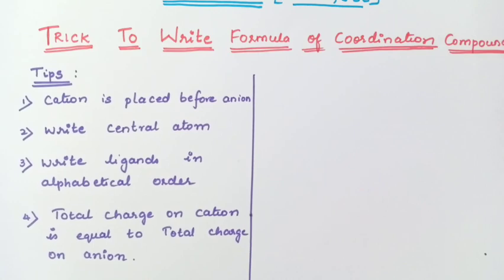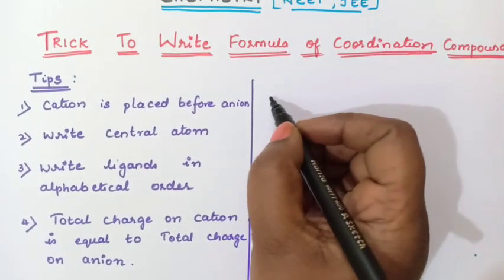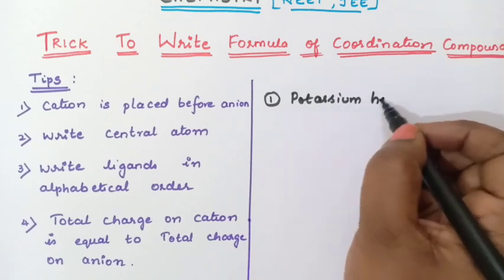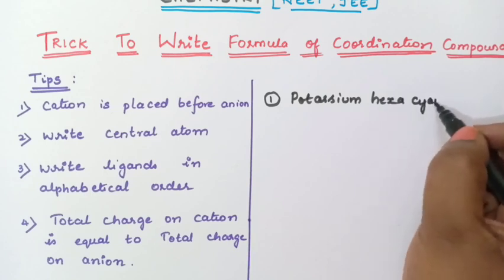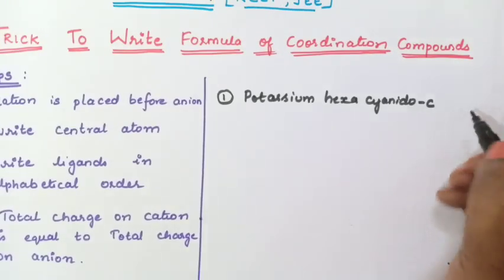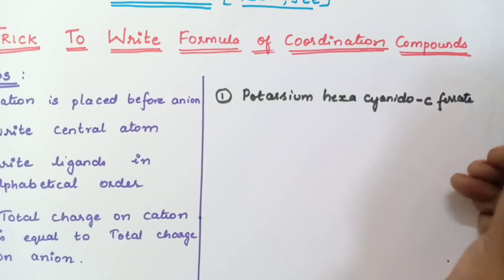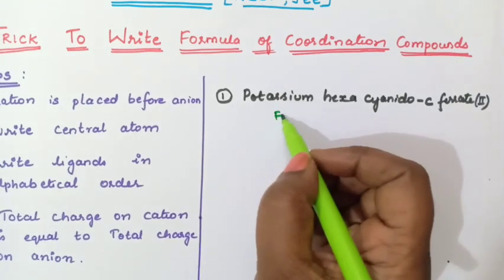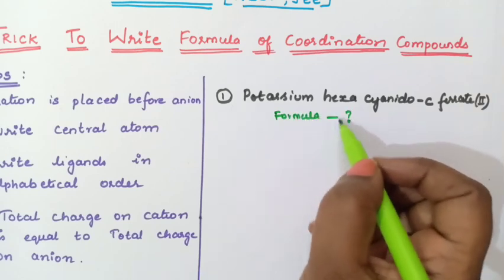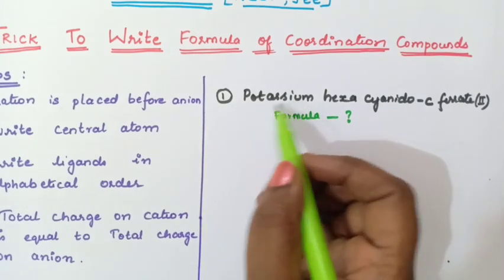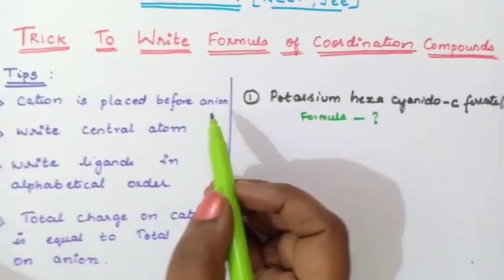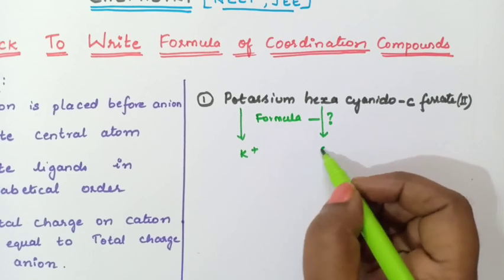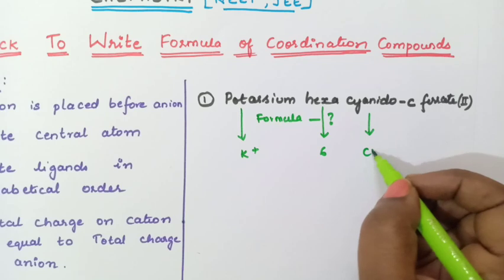So how to apply this? We will take one example. The IUPAC name given is: potassium hexacyanido-C-ferrate(II). So now, potassium formula is K⁺. Hexa means 6. Cyanido means CN⁻ ion.